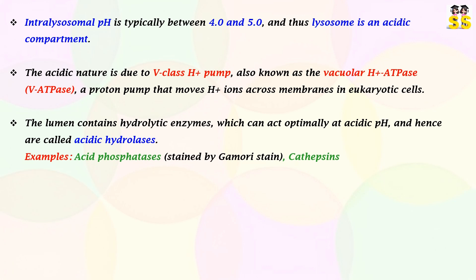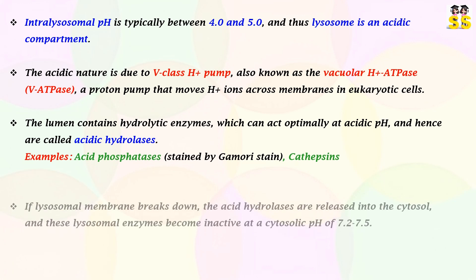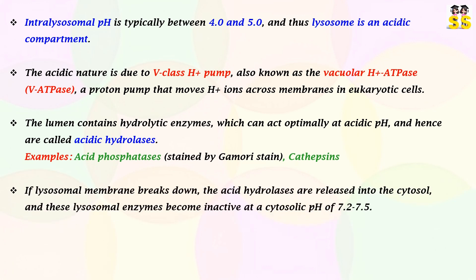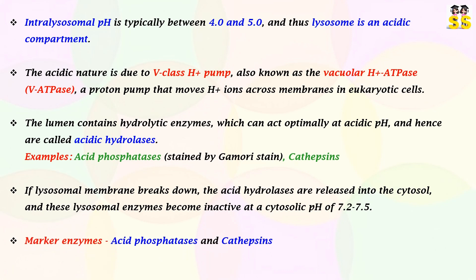Examples of acidic hydrolases include acid phosphatases and cathepsins. Breakdown of the lysosomal membrane releases the acid hydrolases into the cytosol, and these lysosomal enzymes become inactive at a cytosolic pH of 7.2 to 7.5. Marker enzymes of the lysosome are acid phosphatases and cathepsins.